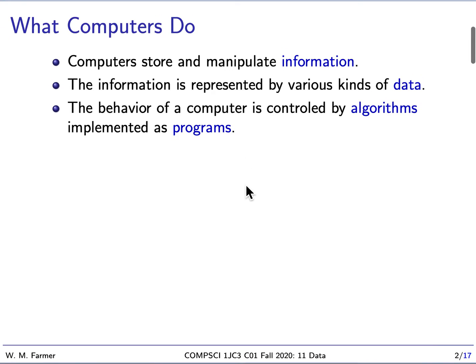Let me remind you of some of the most basic things we've talked about in this course so far. It's what computers do. Computers store and manipulate information, and this information is represented by various kinds of data. The behavior of the computer, how it stores and manipulates this data in particular, is controlled by algorithms, and these algorithms are implemented by programs. In just a few sentences that pretty well sums up what computers are, what they do.